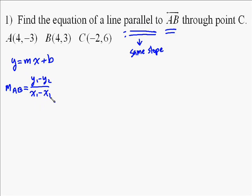Okay, so y1 minus y2, well that's going to be negative 3 minus 3 on top. Those are the two y values. Then on bottom, it will be 4 minus 4.